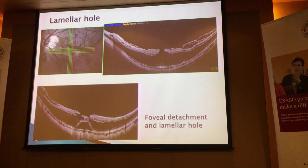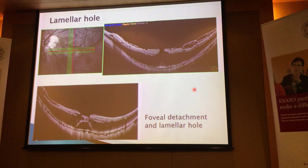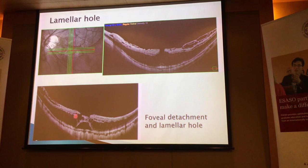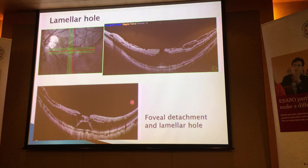This is an example of a schisis with a lamellar hole — the outer retina, where the photoreceptors are, are still attached. This would be what we call the lamellar hole. Once the fovea is detached, please make a note of that, because it is an indication for surgical intervention. In this case, you can see a foveal detachment, still quite localised, but in addition to that, there's also a defect in the inner leaf of the retina — a lamellar hole. This patient is obviously at high risk of forming a full-thickness macular hole or retinal detachment.